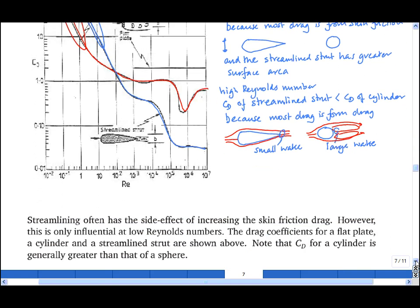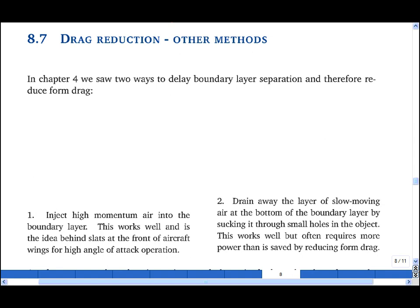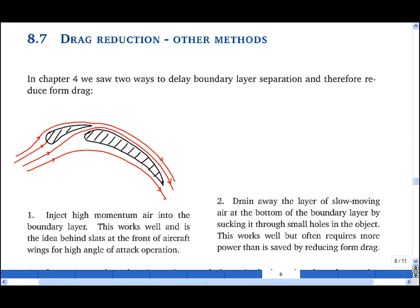Now there are other ways to reduce form drag on an object. In chapter 4, we saw two ways to delay boundary layer separation. The first was around the leading edge slat on a wing, and here one injects high momentum fluid into the boundary layer when it's in danger of separating, and this keeps it attached along the back of the wing.